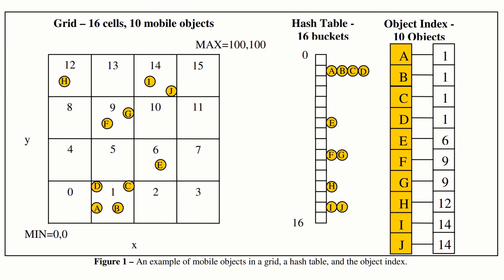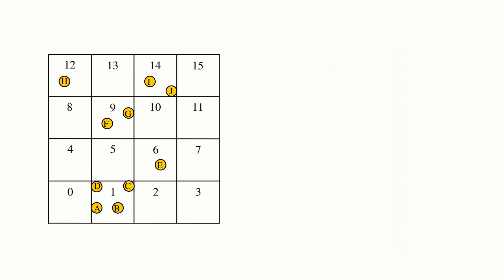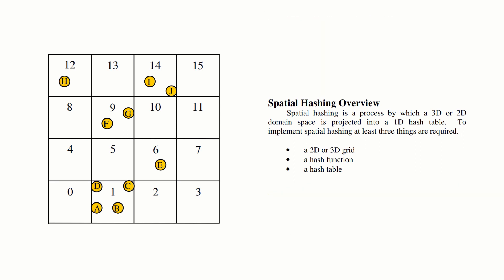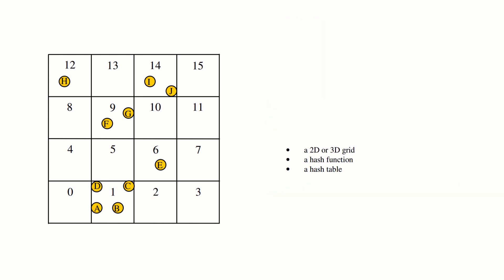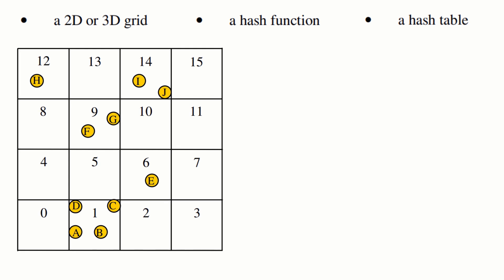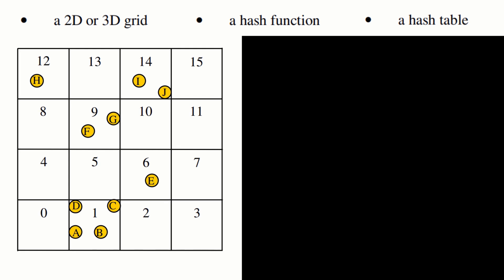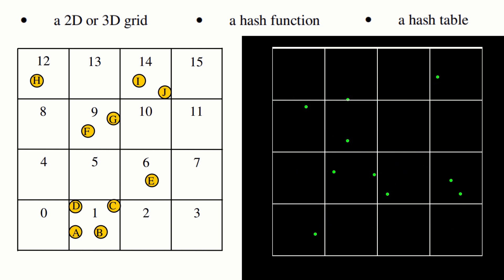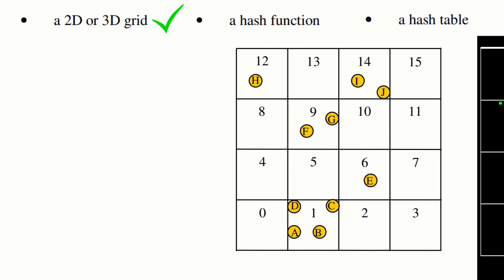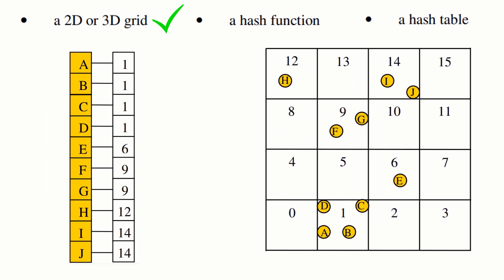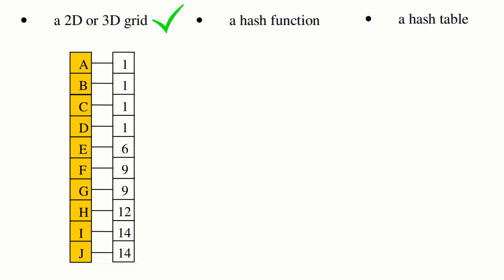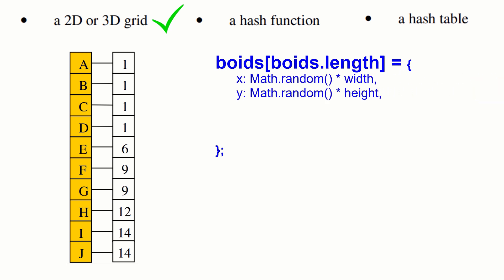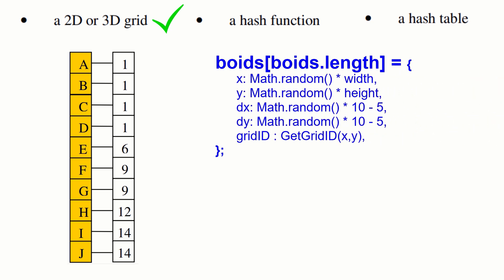For now let's just focus on the grid hash table and object index. There are three requirements stipulated as being necessary for spatial hashing to work. The grid concept is easy enough — you simply section off your 2D plane into a grid and number each section. This is all conceptual of course; in reality there is no grid object and you don't need to draw any lines on the screen. But all of your objects will need to be assigned to one of these grid locations. For our boids, I'll extend their properties to capture this grid reference, adding a grid ID in addition to x, y location and delta x and y vector components.